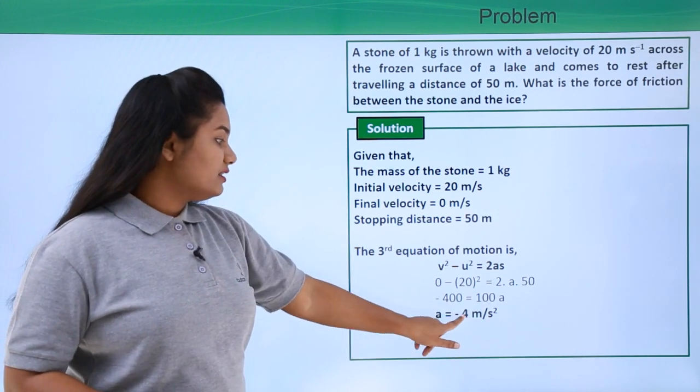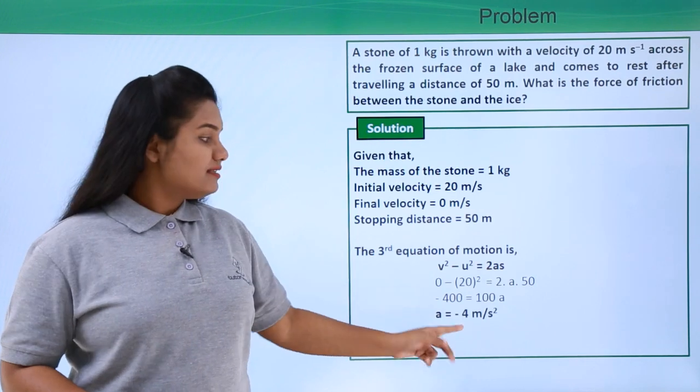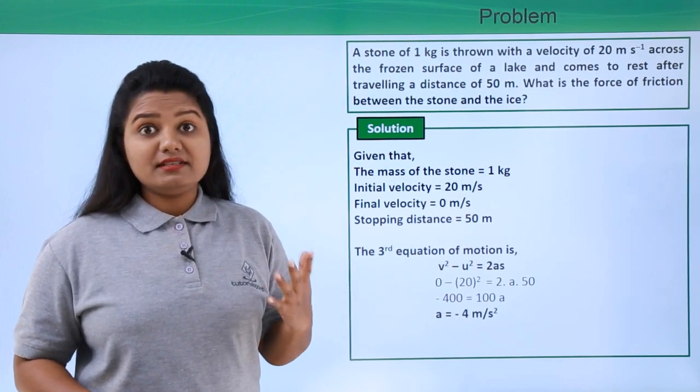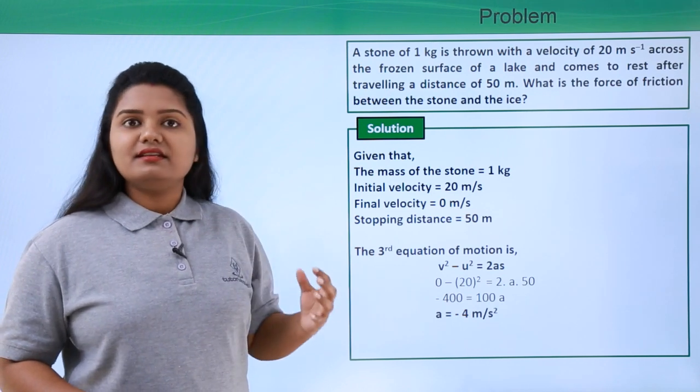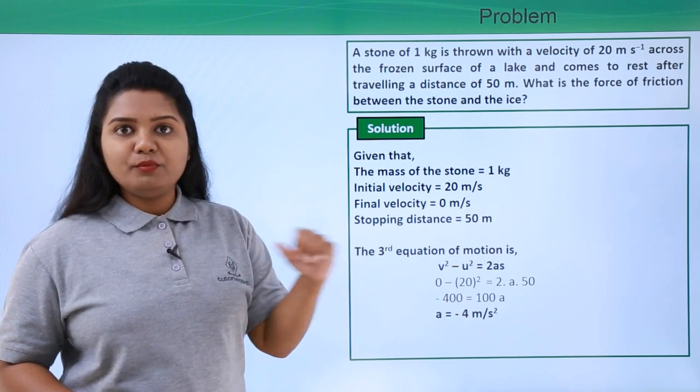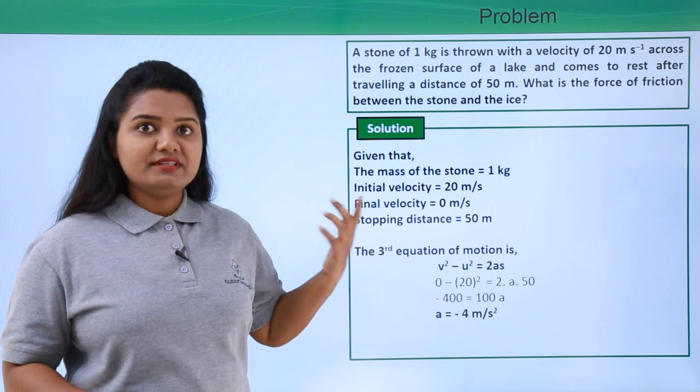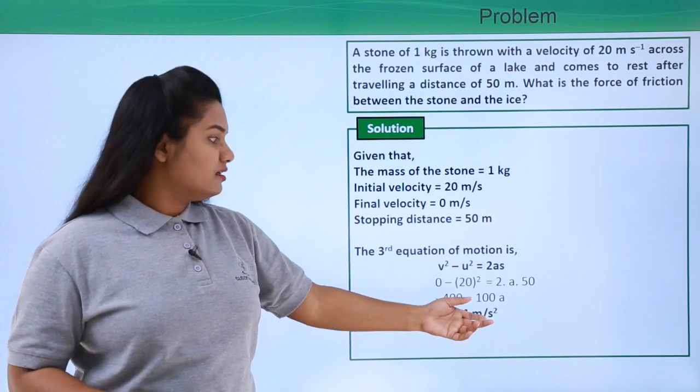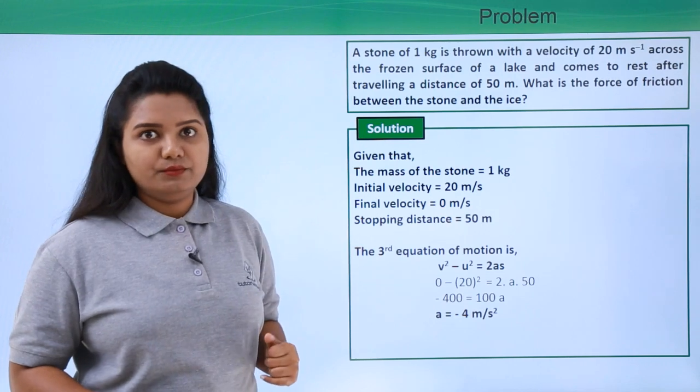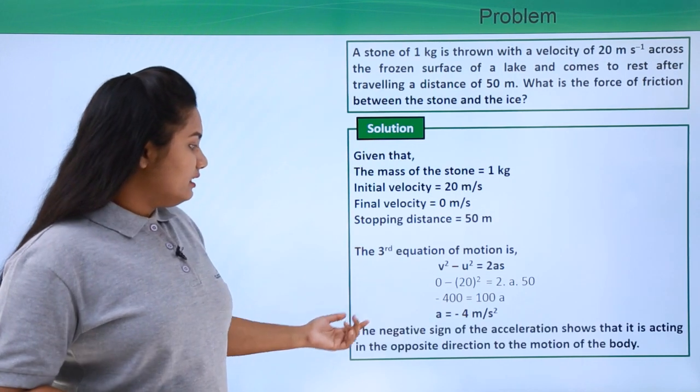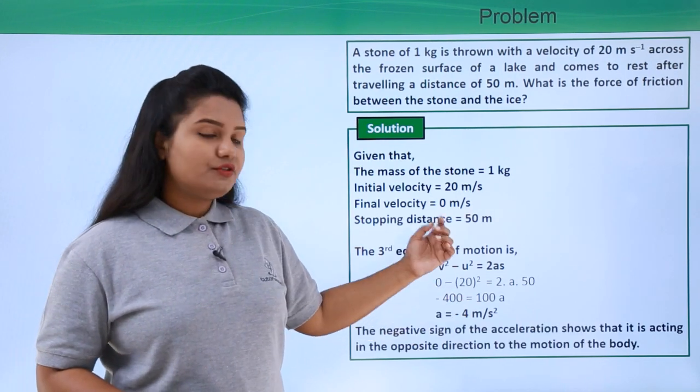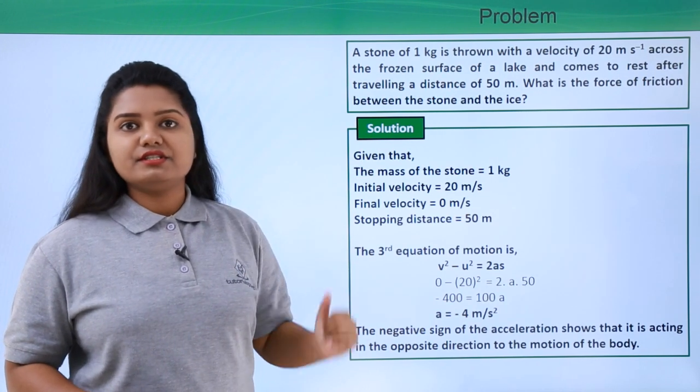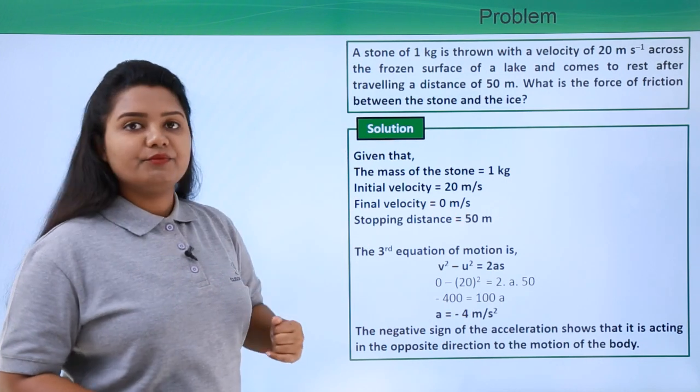Here the acceleration is negative, is found to be negative. This essentially means that the acceleration is directed in an opposite direction to the motion of the stone. That is the reason why the acceleration has turned out to be negative in value. The negative sign shows that the acceleration is acting in a direction which is opposite to the motion of the stone.